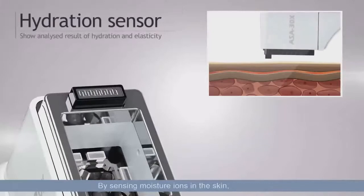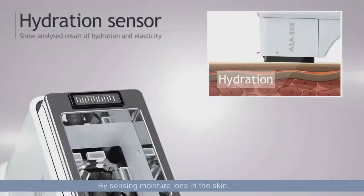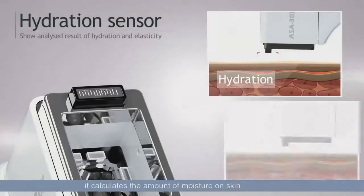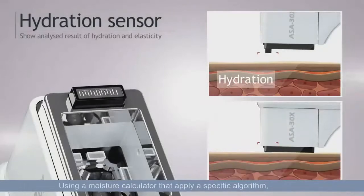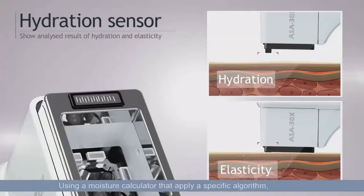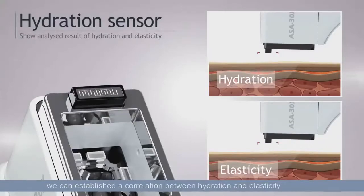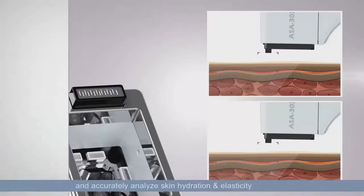By sensing moisture ions in the skin, it calculates the amount of moisture on skin. Using a moisture calculator that applies a specific algorithm, we can establish a correlation between hydration and elasticity and accurately analyze skin hydration and elasticity.